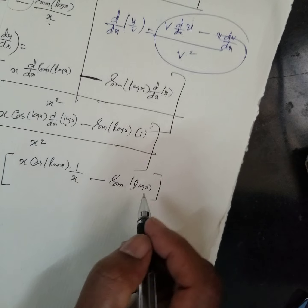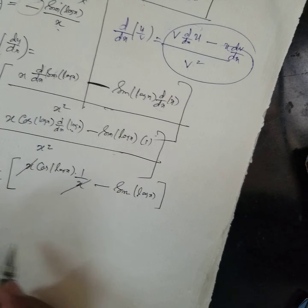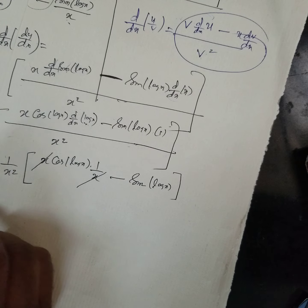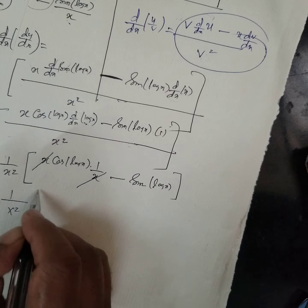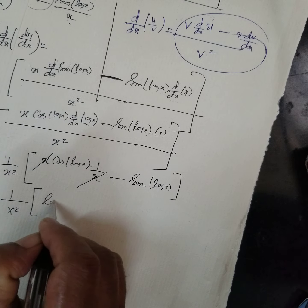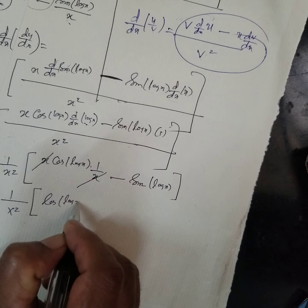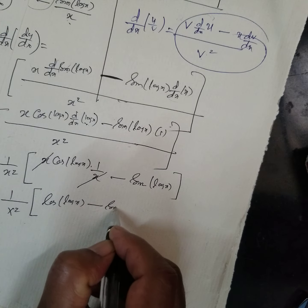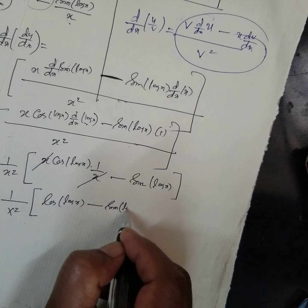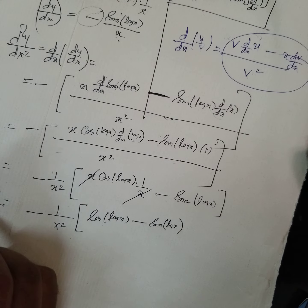So we have minus sin(log x), and the differential coefficient of log x is 1/x. Therefore, dy/dx equals minus sin(log x) divided by x.